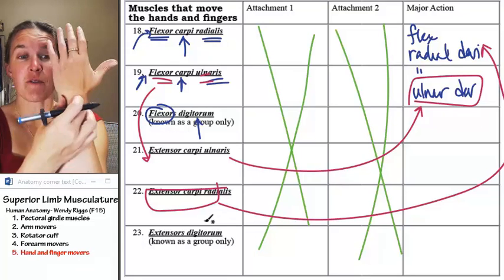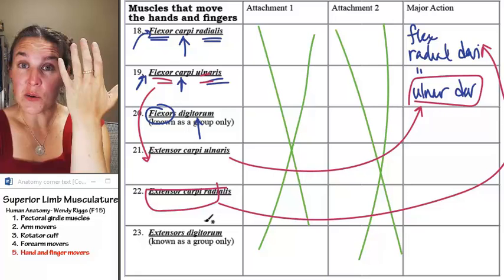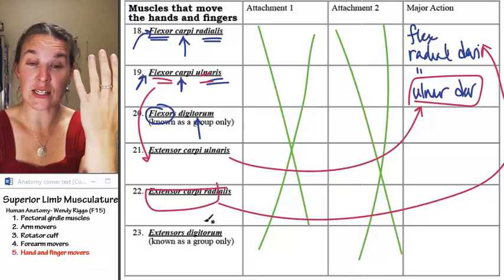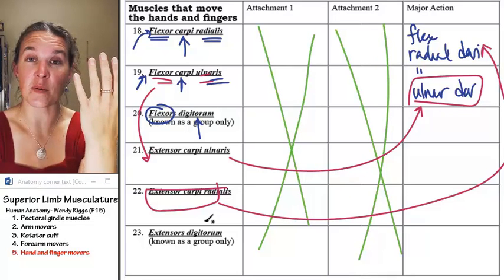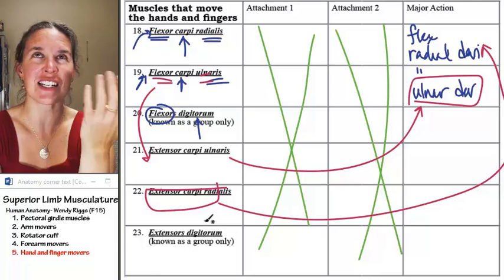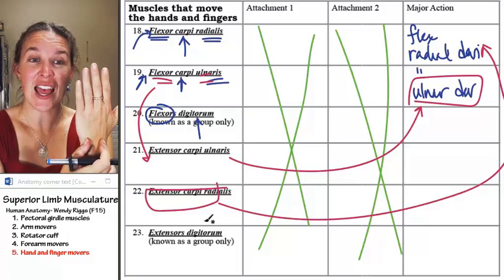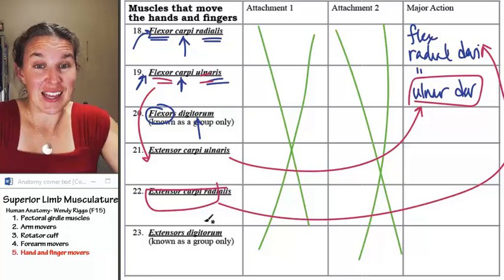Extensors digitorum are found in the middle between my extensor carpi ulnaris and my extensor carpi radialis. Carpi's wrists and digitorums are fingers, and we're extending. That's it.